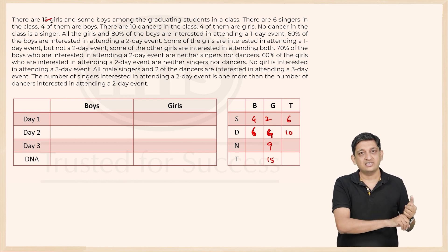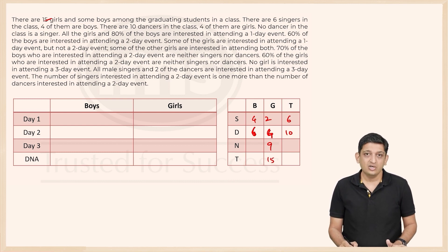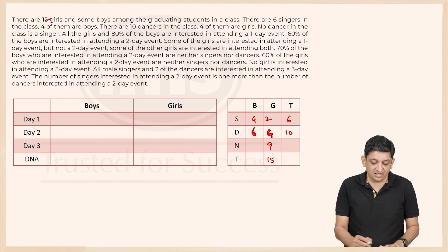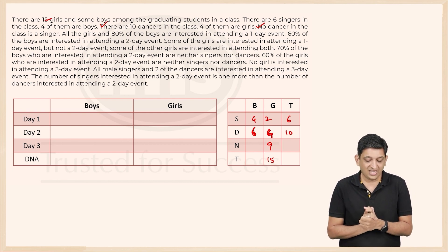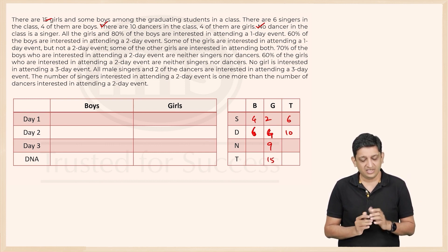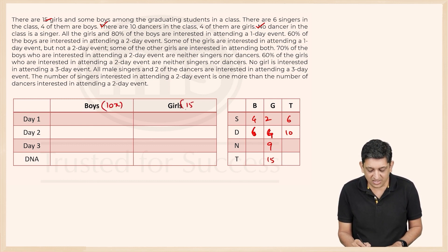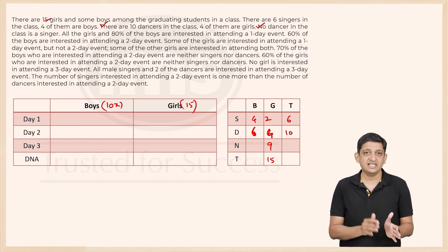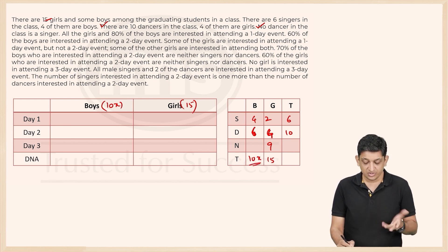It is explicitly stated that no dancer is also a singer — it's either only singing, only dancing, or neither, with no overlap. All the girls and 80 percent of the boys are interested in attending the event. To handle the percentages cleanly, we let the total number of boys be 10x, so that we can work with integer values.